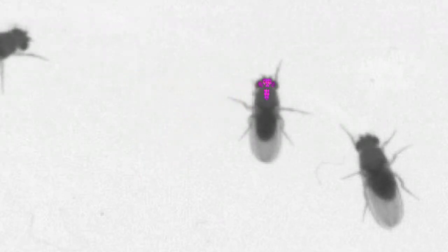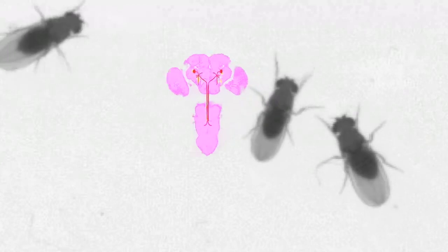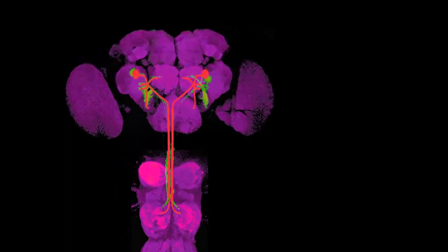It's called the giant fiber, the largest of these descending neurons. The fly has two giant fibers, one on either side of its brain, a right one and a left one.